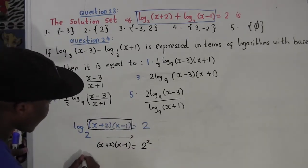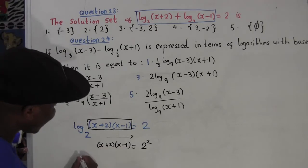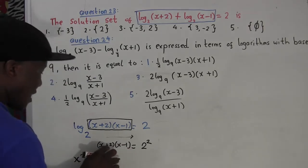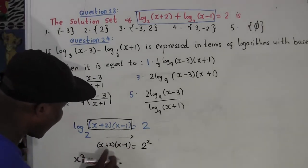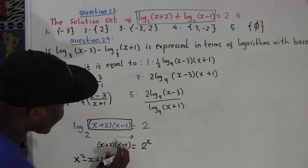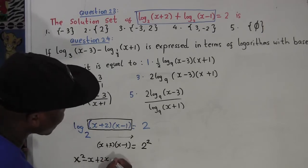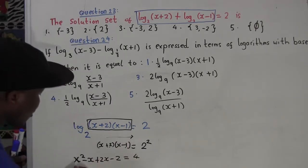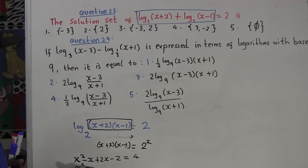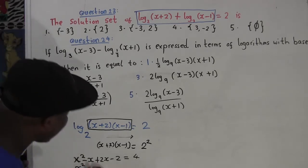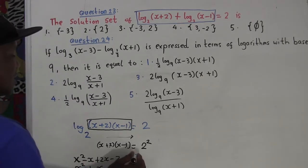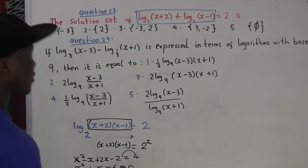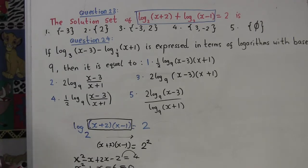Now I'll expand the quadratic. x times x gives x squared, x times negative 1 gives negative x, 2 times x gives positive 2x, and 2 times negative 1 gives negative 2. So we have x squared minus x plus 2x minus 2 equals 4. Simplifying: x squared plus x minus 2 equals 4, then bringing 4 over gives x squared plus x minus 6 equals 0.